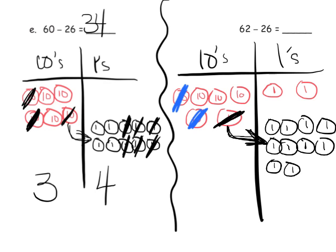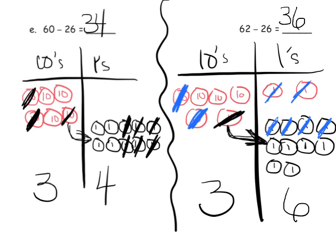Now I can cross off six. One, two, three, four, five, six. And so what is our answer? We have three tens, so that's 30. And we have one, two, three, four, five, six. We have six ones. So our answer is 36.